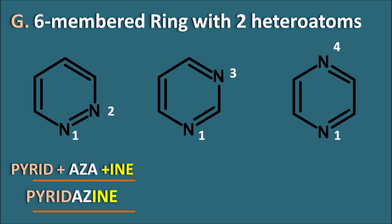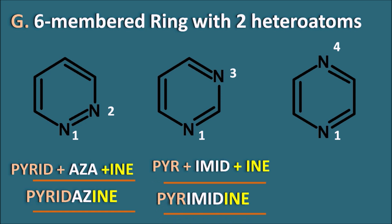For the second one, just like imidazole for five-membered rings: pyr + imid + ine. 'Imid' indicates meta position, that is the third position, and since it is a six-membered ring system the suffix is '-ine'. So pyr + imid + ine gives pyrimidine.